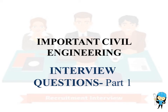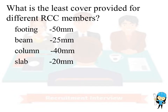Hello friends, welcome to Civil Pin. Today we are going to cover 15 interview questions which are frequently asked in civil engineering interviews. The first question is: what is the least cover provided for different RCC members? The answer is: footing 50 mm, beam 25 mm, column 40 mm, and slab 20 mm.